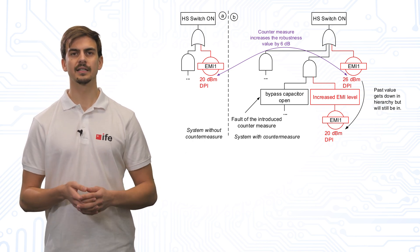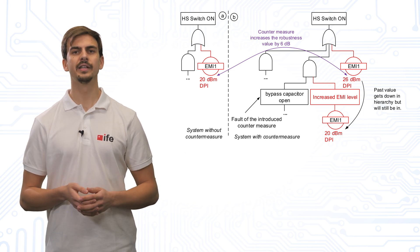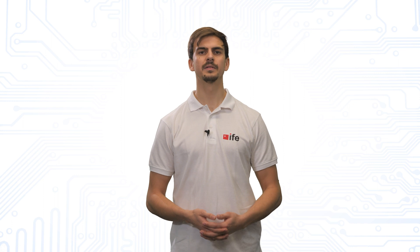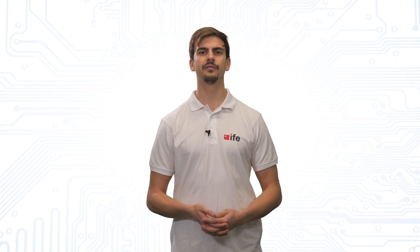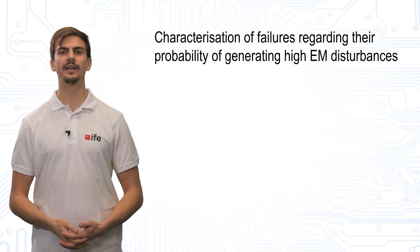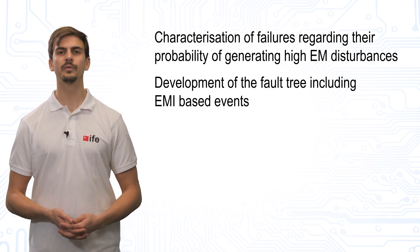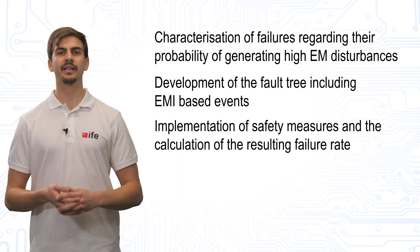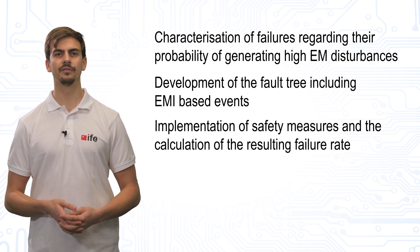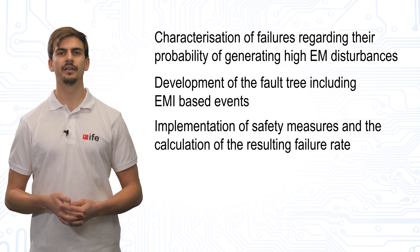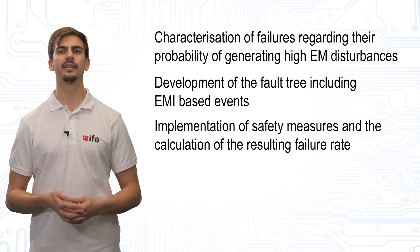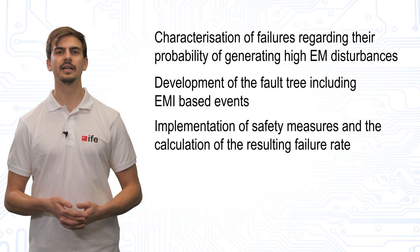The countermeasure increases the susceptibility level of the function by 6 dB and therefore reduces the FIT rate. The distinction between EMI as environment and fault condition helps to develop safety systems by preventing over-engineering. We have shown that linking functional safety with electromagnetic compatibility helps to develop systems that exploit the commonalities of both topics. The methods consist of the characterization of failures regarding their probability of generating high electromagnetic disturbances, the development of the fault tree for the victim including the EMI-based events, the implementation of safety measures, and the calculation of the resulting failure rates. The existing EMC test methods will remain unchanged, and additional information regarding the EMC behavior can be included into functional safety analysis of the application.